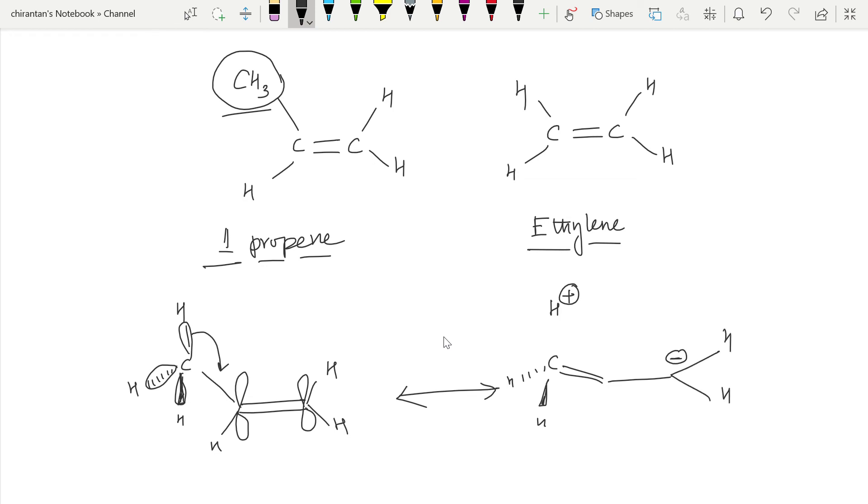Due to this resonance, propene is much more stable compared to ethylene. In ethylene there is no CH3 group, so we cannot expect this kind of conjugation. But here we have the CH3 group with three CH bonds, so three different kinds of conjugation or resonance structures are possible.